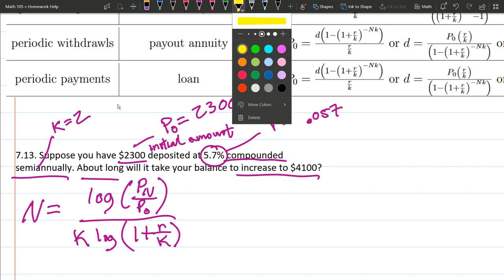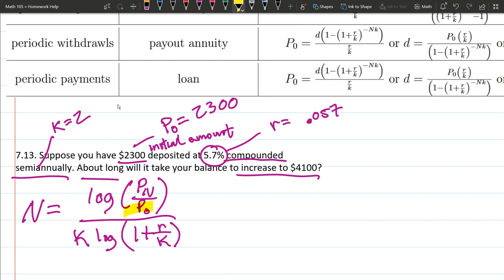So I'm going to go in with this yellow highlighter, and I'm just going to cross out all the stuff that we already got. We got P0, we got k, we have r. k appears twice, so all we need is the Pn.